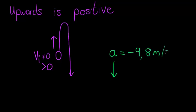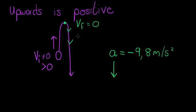Because acceleration is still downwards, acceleration will be negative 9.8 meters per second squared. That means for every second, velocity will lose 9.8 meters per second. Eventually its velocity will be equal to zero — it will stop moving. Then it will start falling back down again, meaning the velocity during the downward portion will be negative.